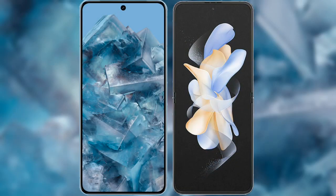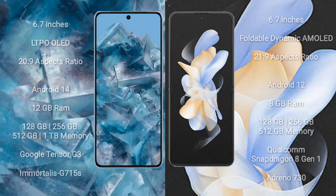I will compare the new Google Pixel 8 Pro with Samsung Galaxy Z Flip 4. Google Pixel 8 Pro comes with a 6.7-inch LTPO OLED display and aspect ratio 20x9. Samsung Galaxy Z Flip 4 comes with a 6.7-inch foldable Dynamic AMOLED display and aspect ratio 21x9.